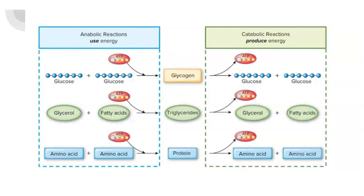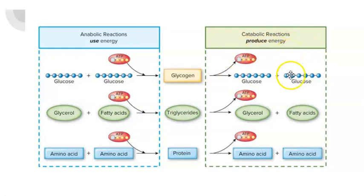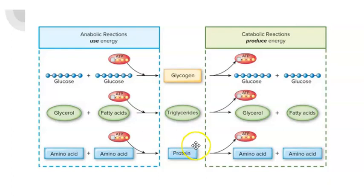If we look at this picture of anabolic and catabolic reactions, you can see how compounds are broken down and synthesized. For example, under the anabolic reaction, we have two glucose molecules which are going to be combined to form glycogen using ATP. That same glycogen molecule will be broken down during catabolic reactions to produce energy and form two single glucose molecules. This can also be done with triglycerides and protein. If we're looking at anabolic reactions, we have two single amino acids, ATP is added, and then we form protein. The catabolic reactions produce energy by releasing ATP and then breaking it down to two single amino acids.